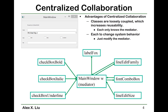Every object only knows the mediator. Each of the seven objects is like one of seven agents in the CIA agent case, and the mediator is like the manager — everyone only knows the manager, and the manager tells everyone what to do. So for example, line edit family does not need to know there's something called font combo box, and font combo box does not need to know there's something called line edit family. This makes it easier to change the system behavior: you only need to modify the mediator, because the mediator basically specifies the whole collaboration.